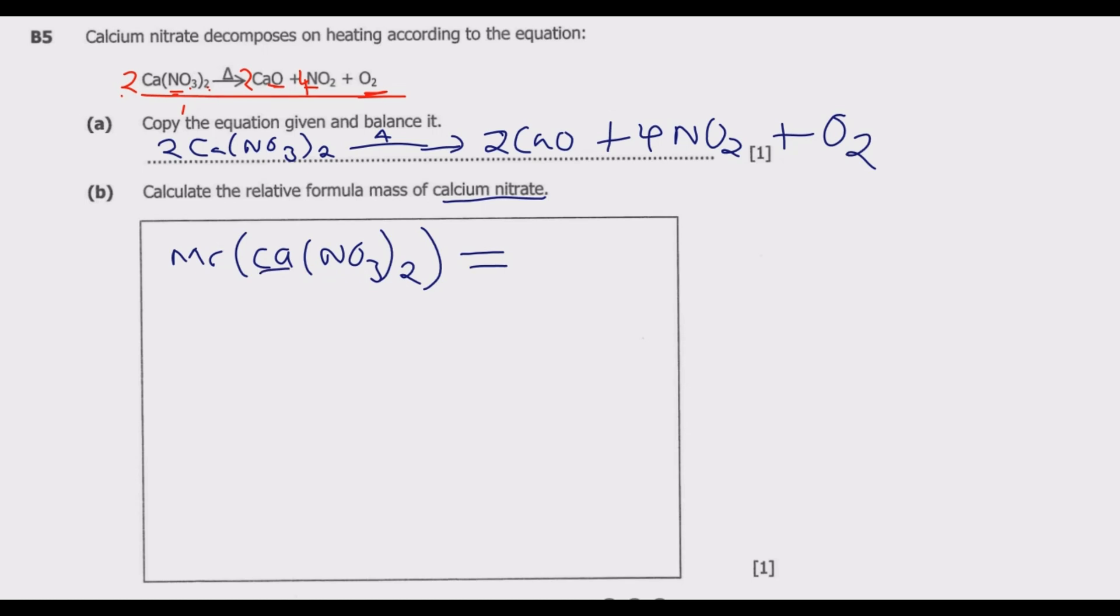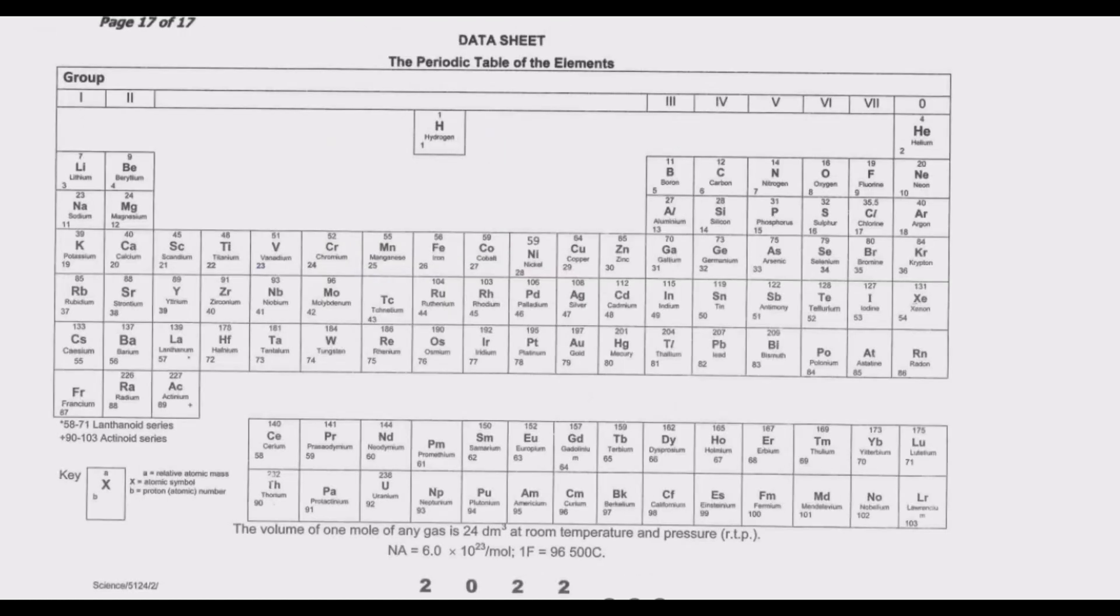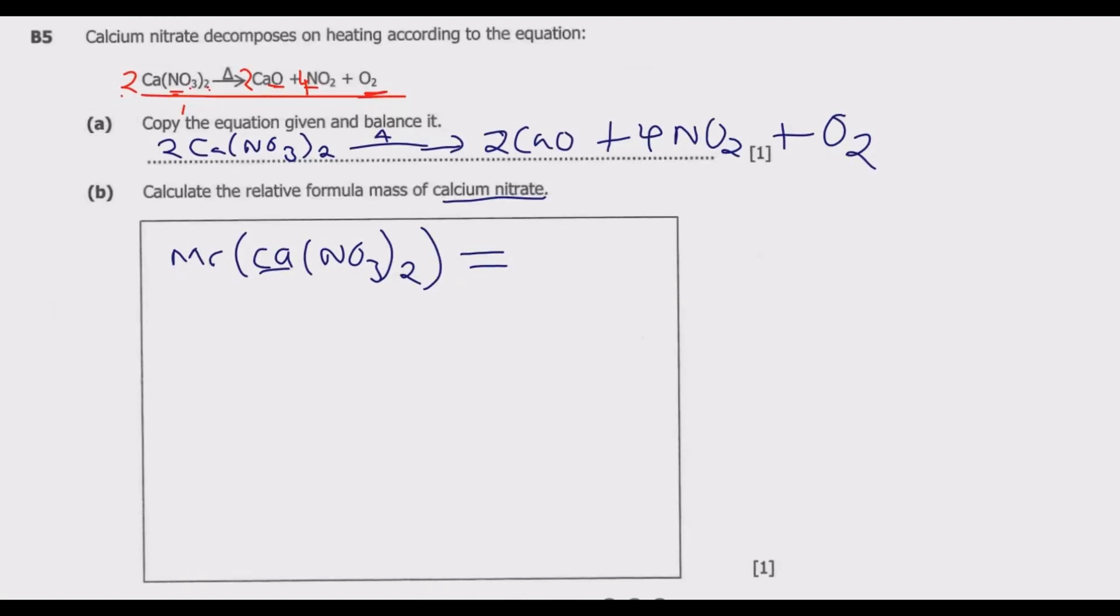When you go to the periodic table we are going to look for calcium. Calcium is 40. Then we also have nitrogen which is 14. Then we have oxygen which is 16. So what we do is we come here, calcium is 40, then plus we have nitrogen which is 14. There are 2 nitrogen here, so it will be 2 multiplied by 14. Then plus we have oxygen, so oxygen is 2 times 3 which is 6, so 6 multiplied by 16.